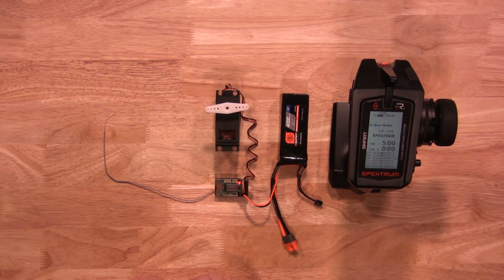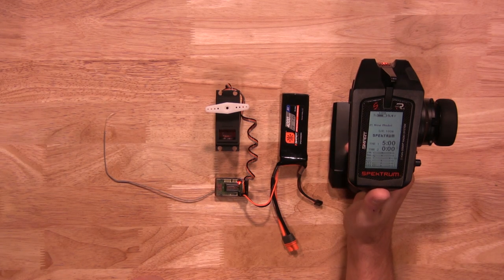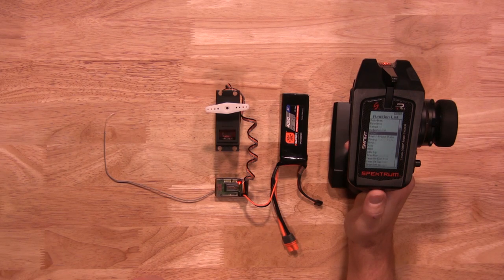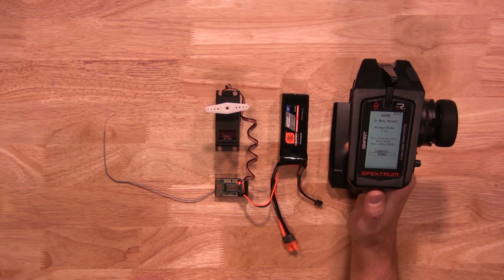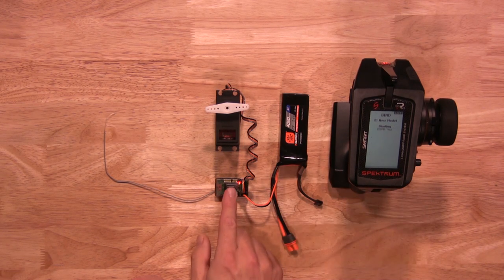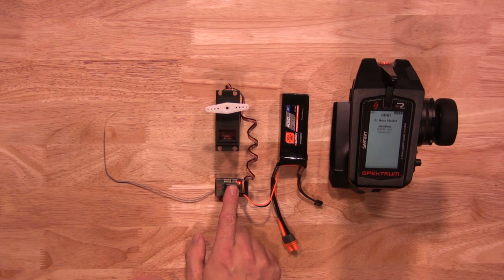Now it's time to put the transmitter in bind mode. Go to the transmitter, go to menu, scroll down to bind. You're going to hit bind, scroll down again to bind, and click on that. You'll notice the light goes from flashing to solid to let you know it's been bound.